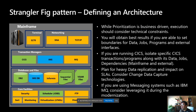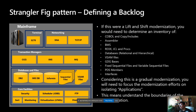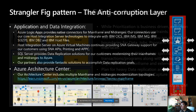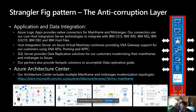The next step is to define an architecture. Comparing the mainframe before and after, we highlight colors to identify applications to isolate. Prioritization is business-driven; execution must consider technical constraints. You obtain best results if you set boundaries for data, jobs, programs, and external interfaces. For example, if picking CICS, isolate the specific CICS transactions, programs, their data, job dependencies, and external interfaces. You must also plan for data impact on SLAs, consider change data capture technologies, and if using messaging systems like IBM MQ, leverage it throughout the entire modernization.